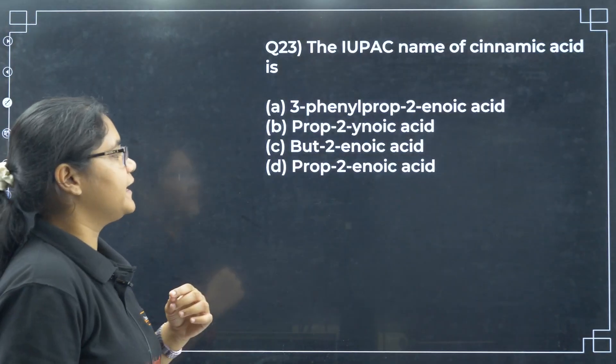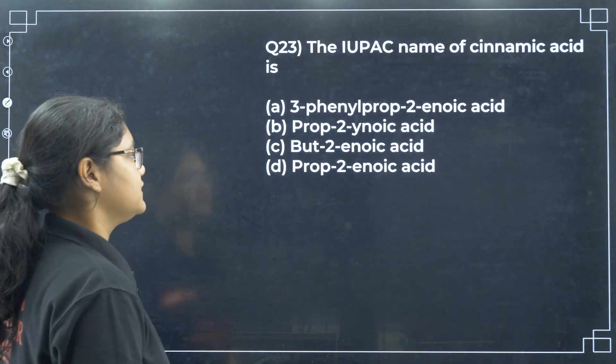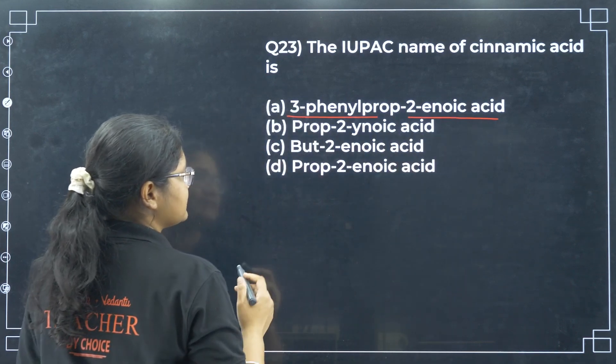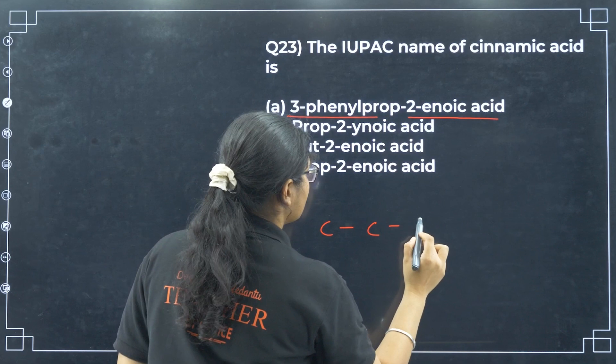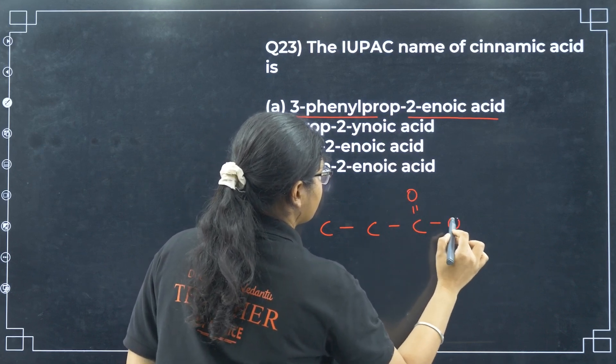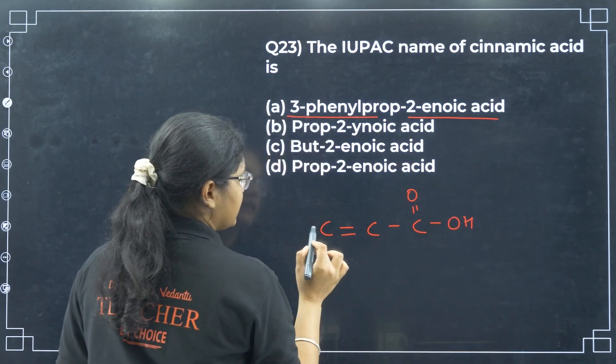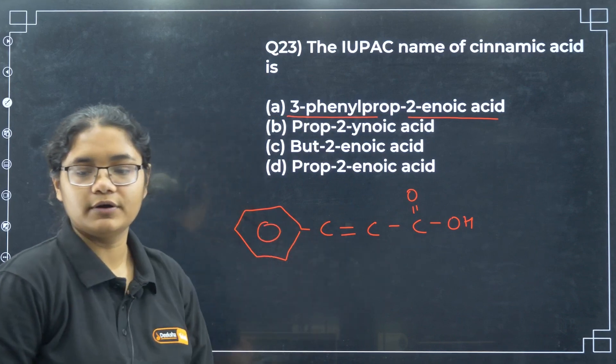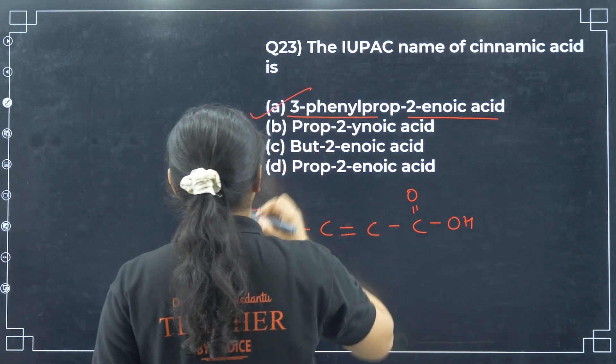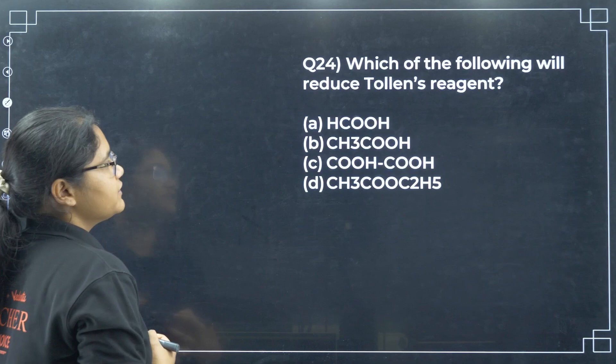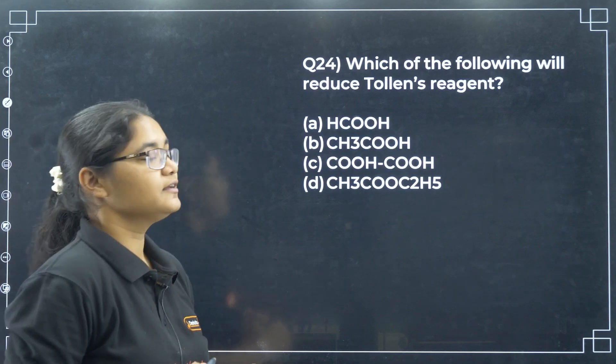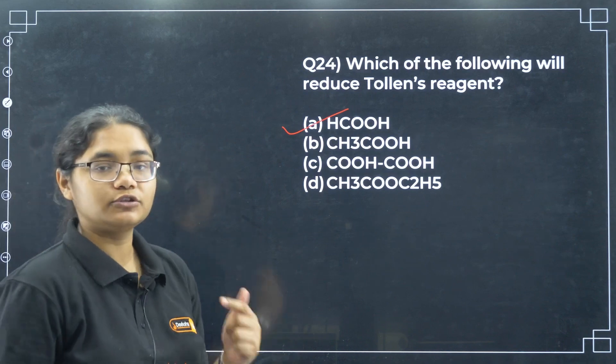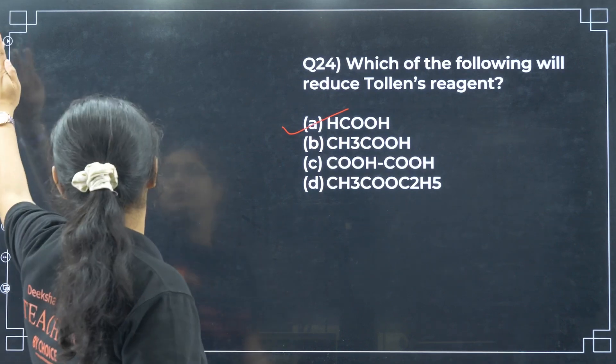Next, IUPAC name of cinnamic acid. If you see cinnamic acid, we have 3-phenylprop-2-enoic acid. Next, which of the following will reduce Tollens reagent? Your methanoic acid HCOOH can reduce both Tollens reagent and Fehling solution.